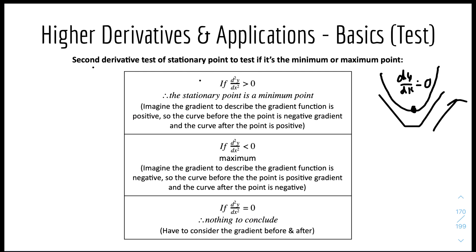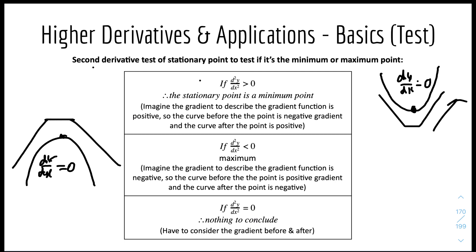The opposite is true when the second derivative is less than zero — it will be a maximum point. The gradient describing the gradient function is negative, so the curve before the maximum point has a positive gradient and the curve after has a negative gradient. For a quadratic curve, the maximum point is where dy/dx equals zero, and the overall gradient is decreasing — increasing, then stationary, then decreasing. So if the second derivative test is negative, it will be a maximum point.